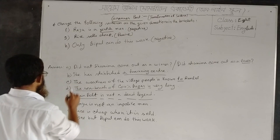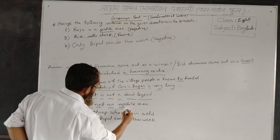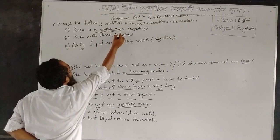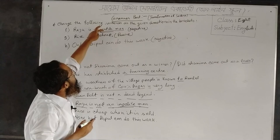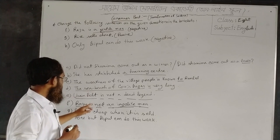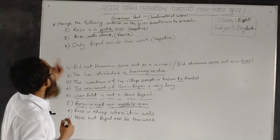Raju is not an impolite man. Here 'impolite man' is the antonym of 'a gentleman'. Actually, we have changed the word 'gentle' — we have used the antonym of 'gentle', that is 'polite' → 'impolite'. Raju is not an impolite man. This is the negative form of 'Raju is a gentleman'.